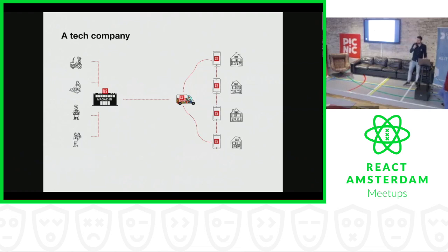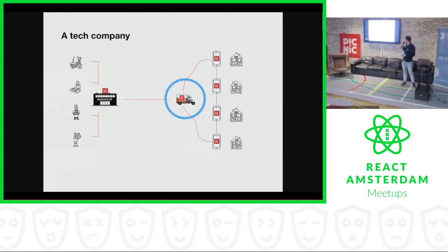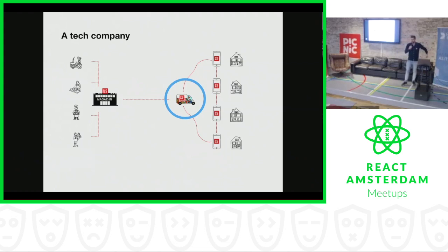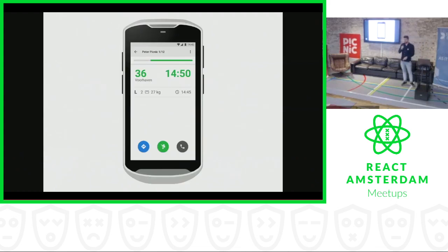But as you can imagine, delivering groceries is not an easy challenge. And in order to solve this challenge, we built basically almost every system used to solve this problem ourselves. And myself, I'm working on the runner app. It's not yet live, but it will be an app that guides our runners from the hub to our customers and shows which groceries they have to deliver. And this is how it looks like.